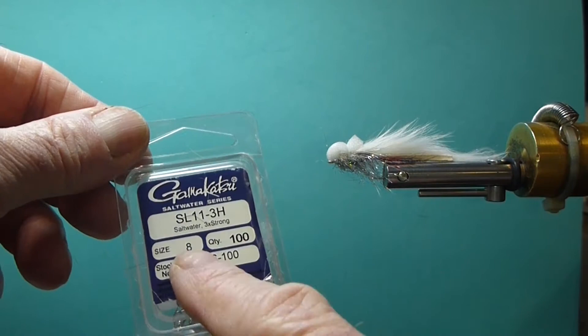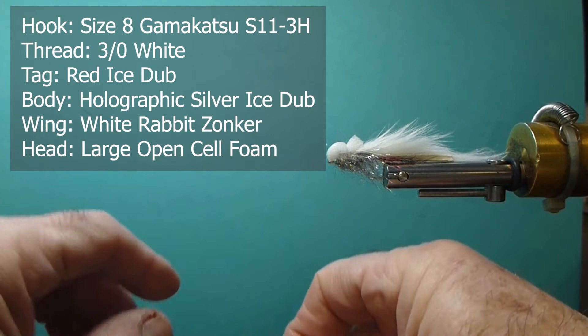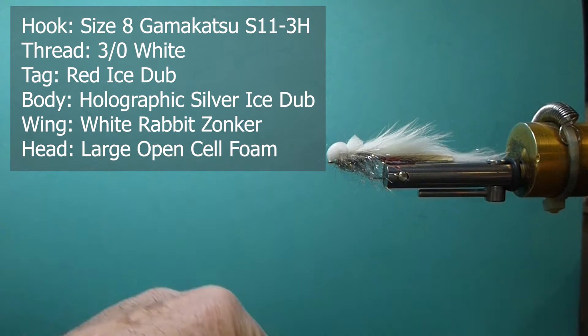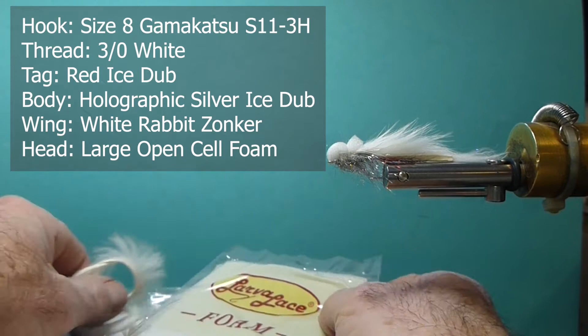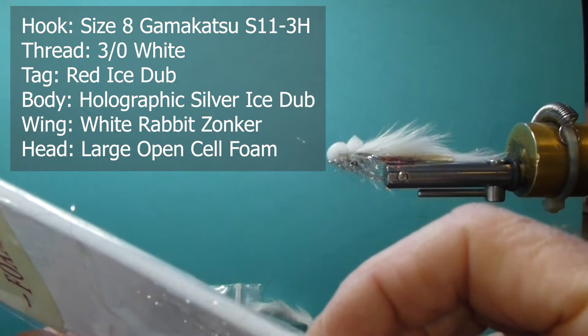So the hook I'm going to use is a size 8, this is a Gamakatsu saltwater hook. What I like about these hooks, they're very strong but they're light and so the weight is important. Of course when I'm using proper foam it doesn't matter as much. I like to use this larva lace foam, this is a heavy open cell foam.